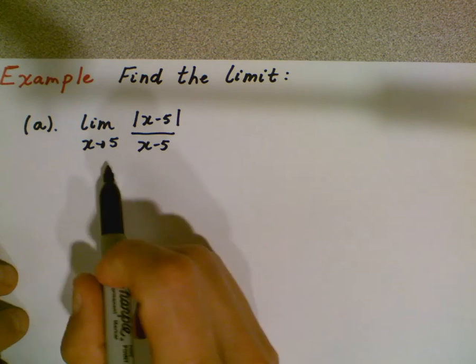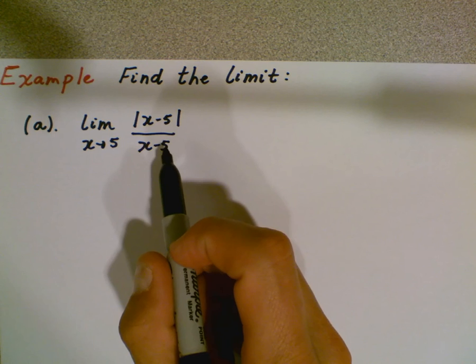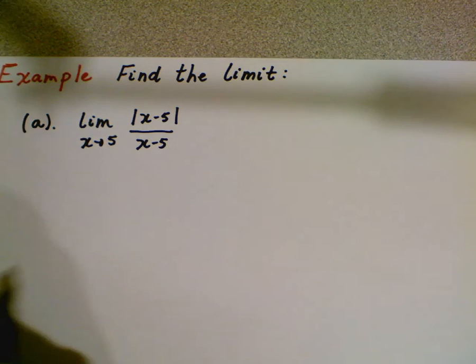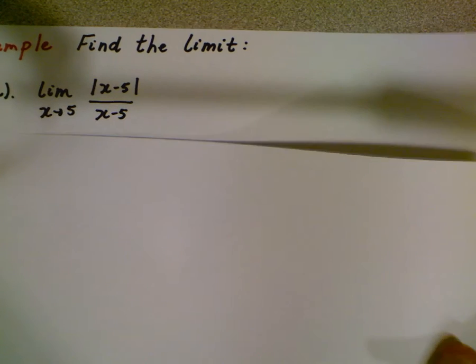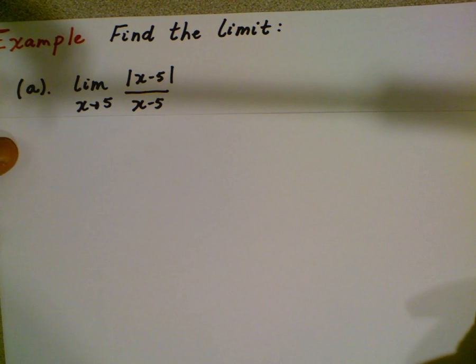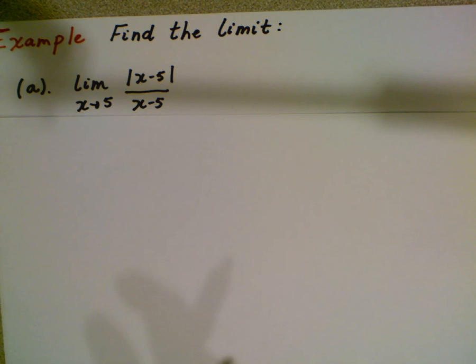The limit as x is approaching 5 of the absolute value of x minus 5 over x minus 5. You can do these graphically and what's going to happen here is you're going to look really at a piecewise function, but we're going to try to do this algebraically.